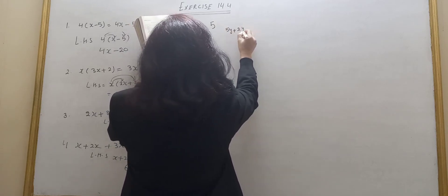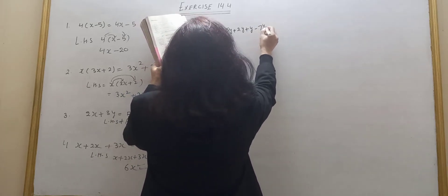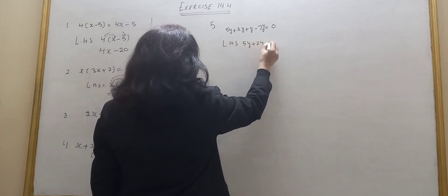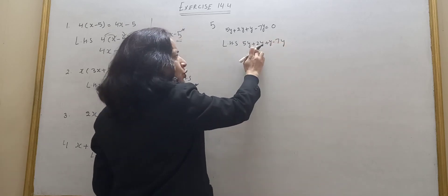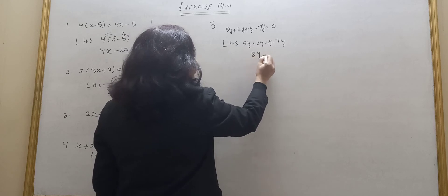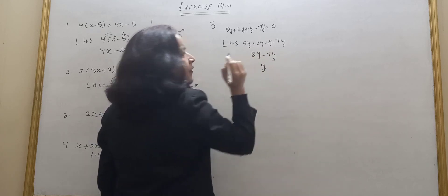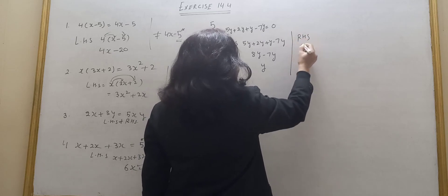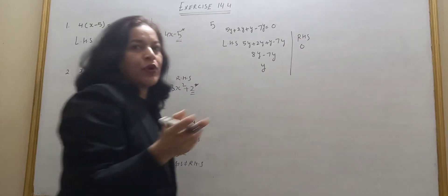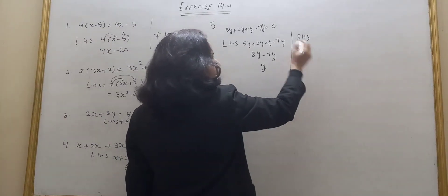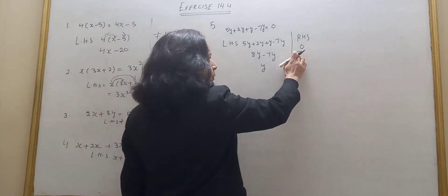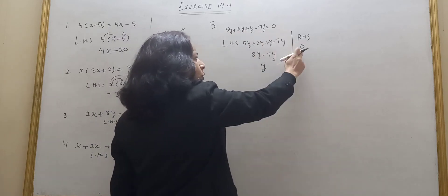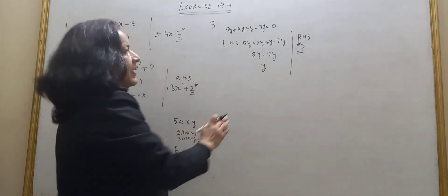Question number 5: 5y plus 2y plus y minus 7y is equal to 0. Left hand side: 5y plus 2y plus y minus 7y. 5 plus 2 is 7, plus 1 is 8. So 8y minus 7y is 1y, which is y. But right hand side is 0 — left hand side is not equal to right hand side. The error is 0; it should be y. Here the correct answer is y.